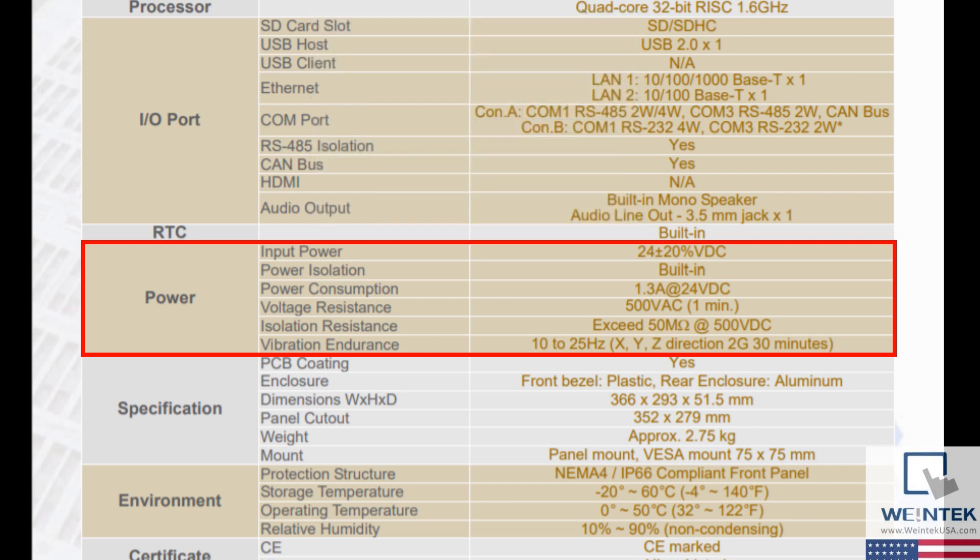Power isolation is a protective feature that provides electrical separation between two circuits. This barrier ensures that electrical equipment is safe and prevents shocks or fire hazards. Power consumption is the energy needed for the device to function, which is 1.3A at 24V direct current. The voltage resistance section denotes that the screen has been tested for and can withstand 500V of alternating current for one minute.